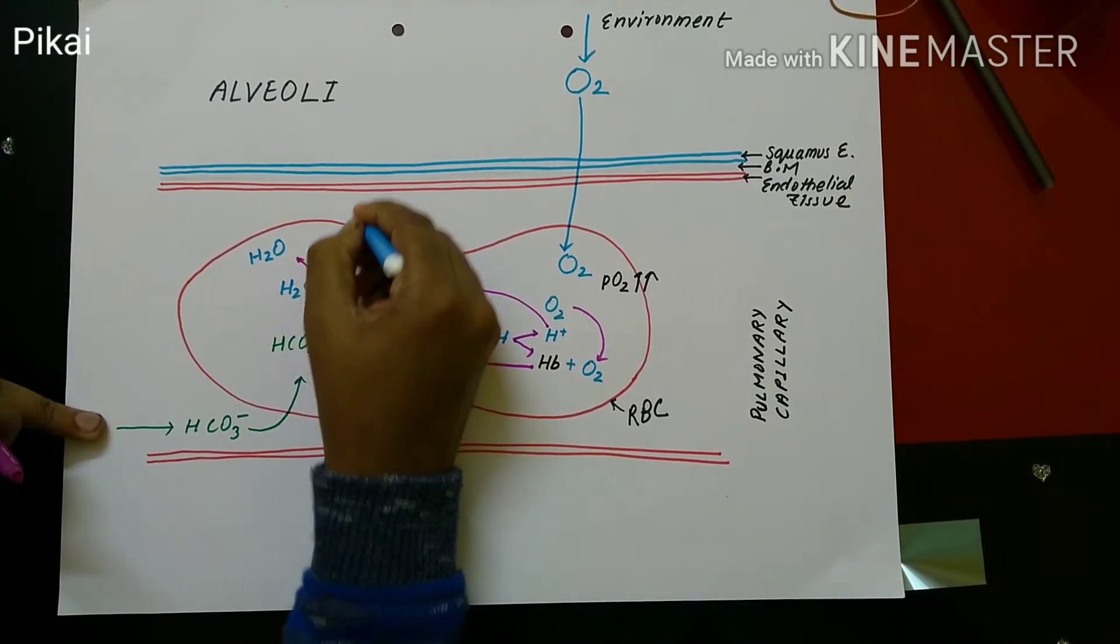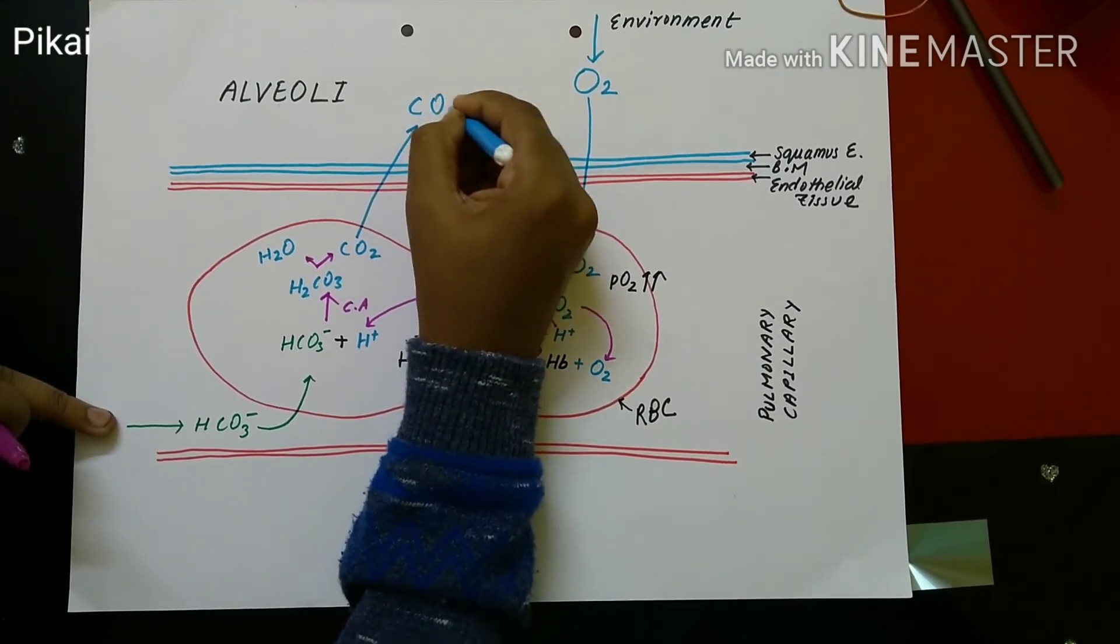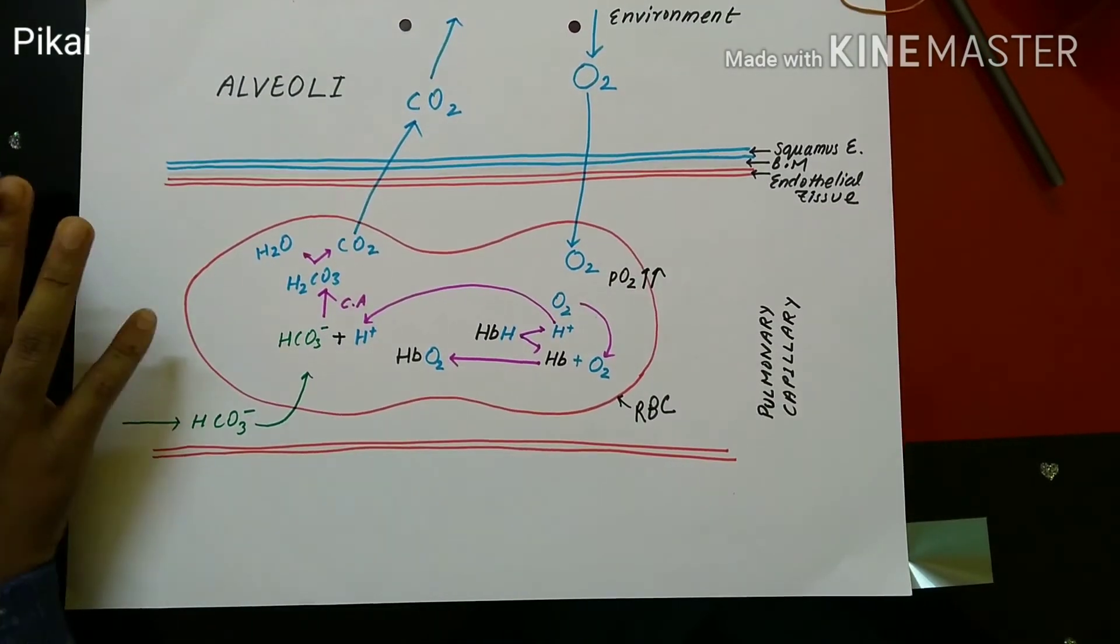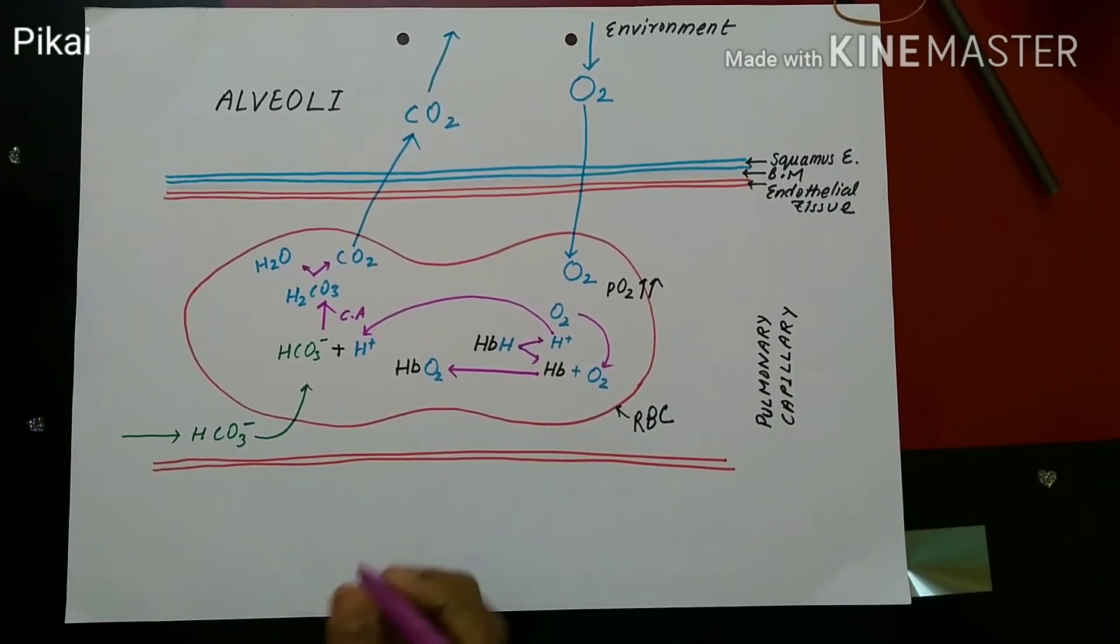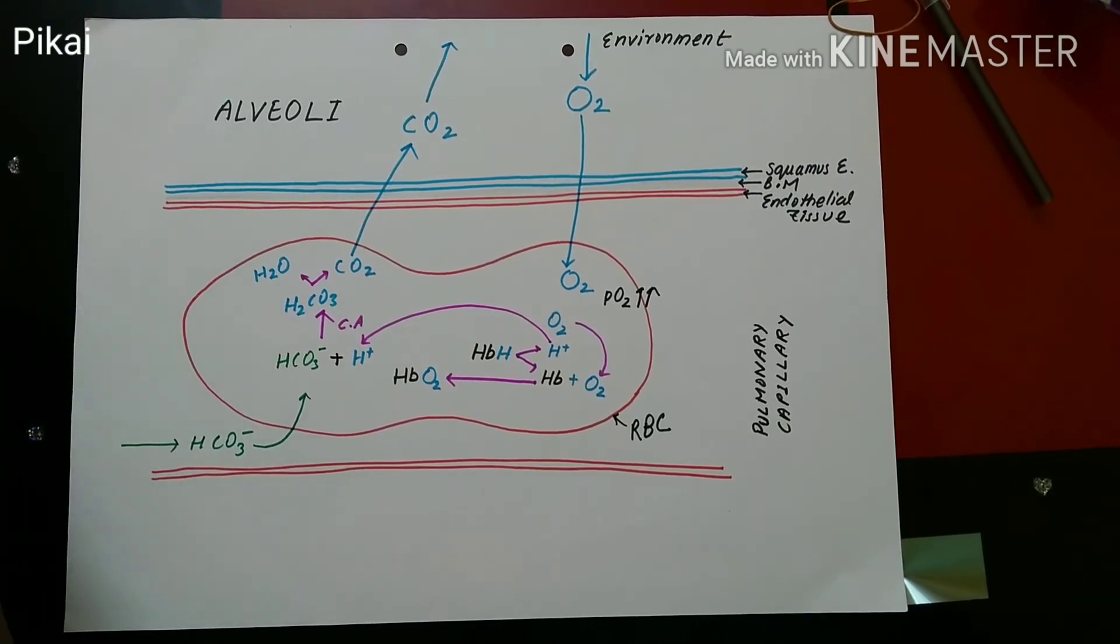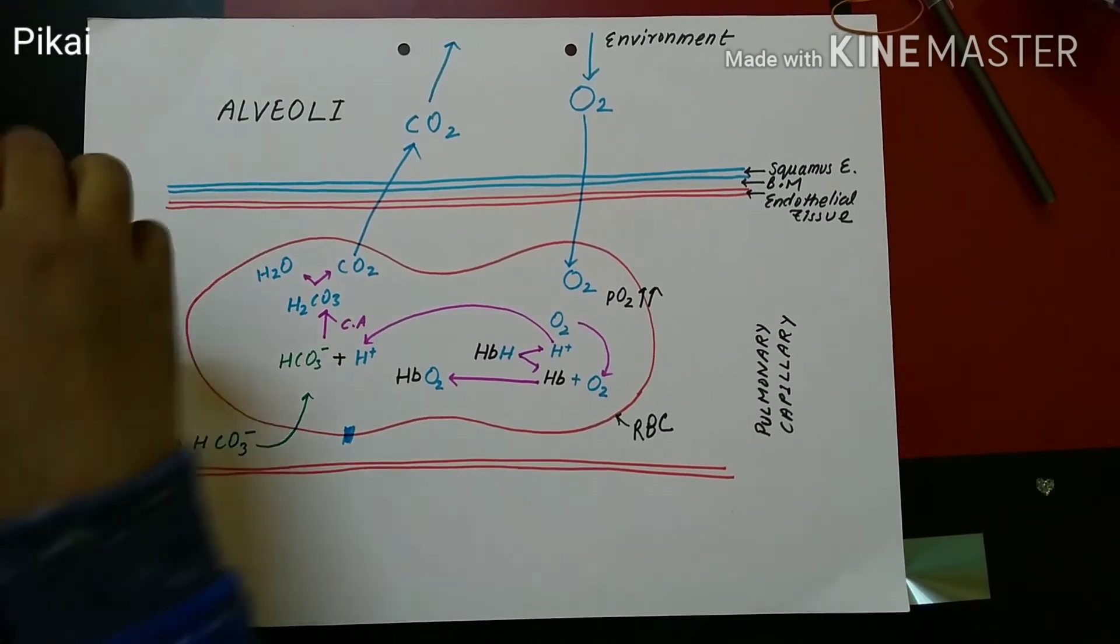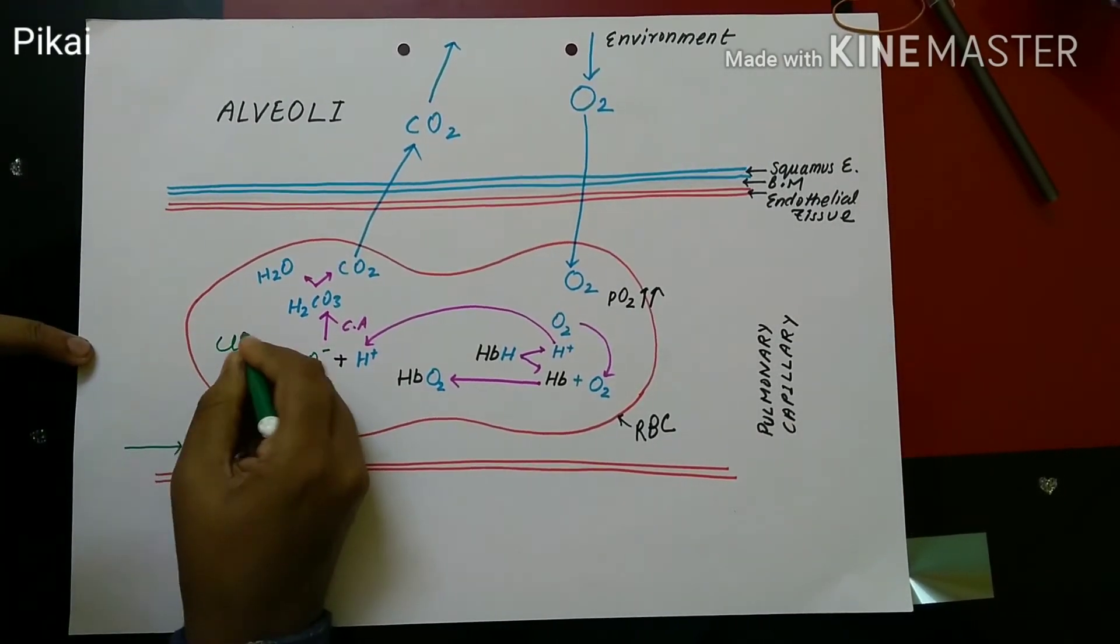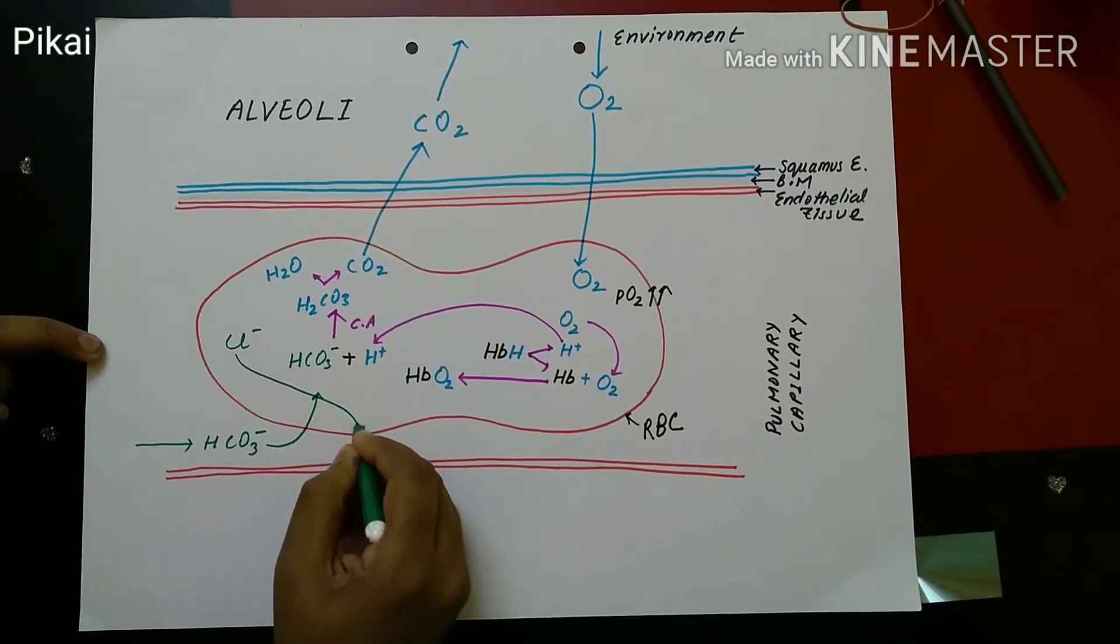Then carbonic acid dissociates into CO2 and H2O. This CO2 goes towards the alveoli and moves out through nasal cavity to surrounding. So this CO2 diffuses out of the body through alveolar membrane and O2 enters from the environment inside the pulmonary capillary through this alveolar membrane.